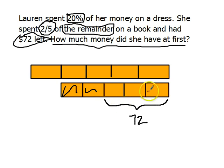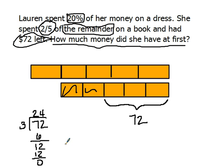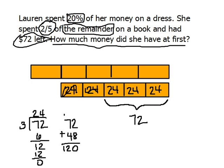I need to know the value of each unit in the bottom bar. I'll take 72 and divide it by 3, which gives the value of each block as $24. I'll write $24 in each of those blocks. 24 plus 24 is $48 for the two spent units. To get the value of the entire bottom bar, I add 72 to 48, and the value of the bottom bar is $120. That means four-fifths of the money she had was $120. Let's represent that.